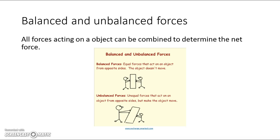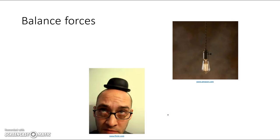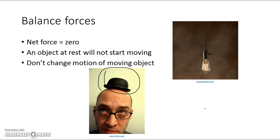Balanced and unbalanced forces — forces acting on an object can be combined to find the net force, which is the overall force applied to the object. Balanced forces are equal forces coming from opposite sides that cancel each other out. A hat stays on someone's head and a hanging light keeps hanging because all forces are balanced. Balanced forces have a net force equal to zero, so the object at rest will not start moving.